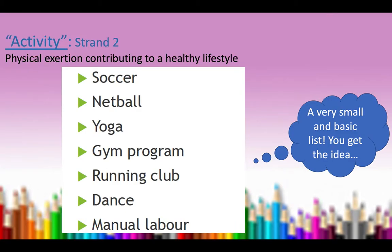The second strand is activity, which the IB defines as physical exertion contributing to a healthy lifestyle. This can also be linked to things like diet — healthy lifestyle may overlap somewhat. Examples include playing a team sport, going to the gym, training for a run, dancing, or manual labour. Sometimes people link activity with creativity — for example, wanting to build something large, linking the manual labour with redesigning a room. It doesn't have to be standalone.